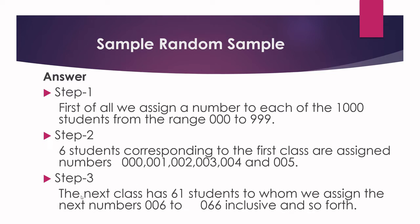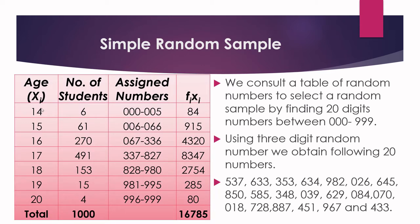The next class has 61 students, so we assign numbers from 006 to 066 inclusive, and so forth. Here is the table: Age 14, 15, and so on to 20; number of students 6, 61, and so on to 4. We assign numbers 000 to 005 for age 14, 006 to 066 for age 15, 067 to 336 for the next group, and similarly assign numbers to all units up to 999.